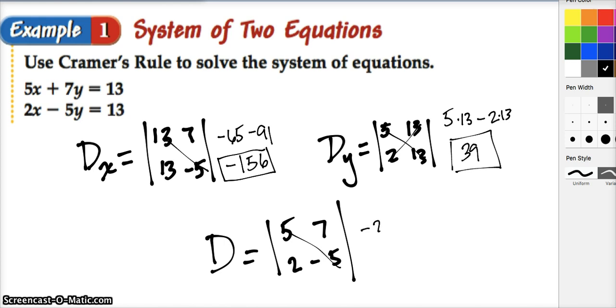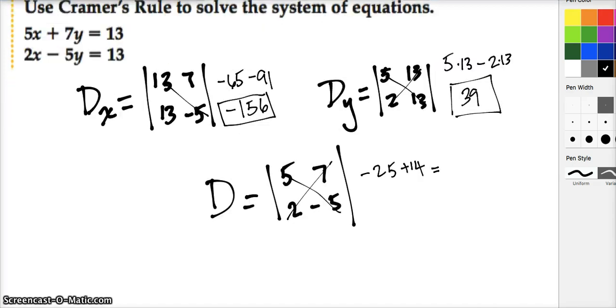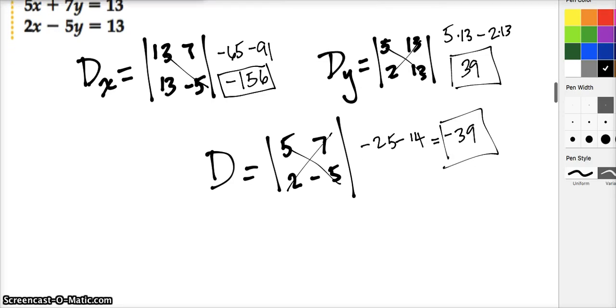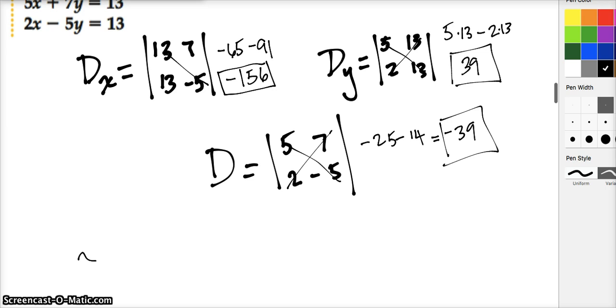Joining these guys together, we get negative 156 as the value for this determinant. We're going to do the same thing here, multiply down 5 times 13, then subtract up 2 times 13. 5 times 13 minus 2 times 13 gives 3 times 13, which is 39. The value of that determinant is 39.